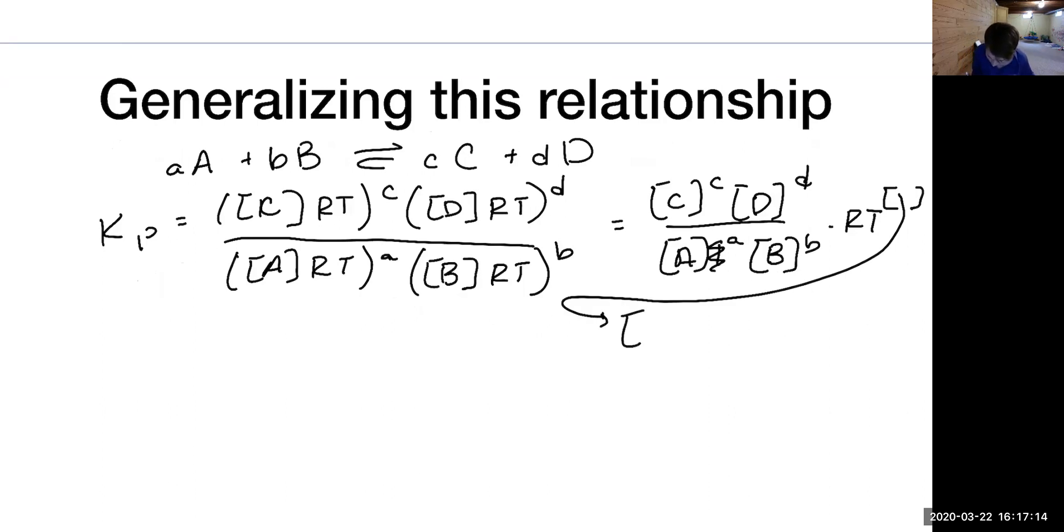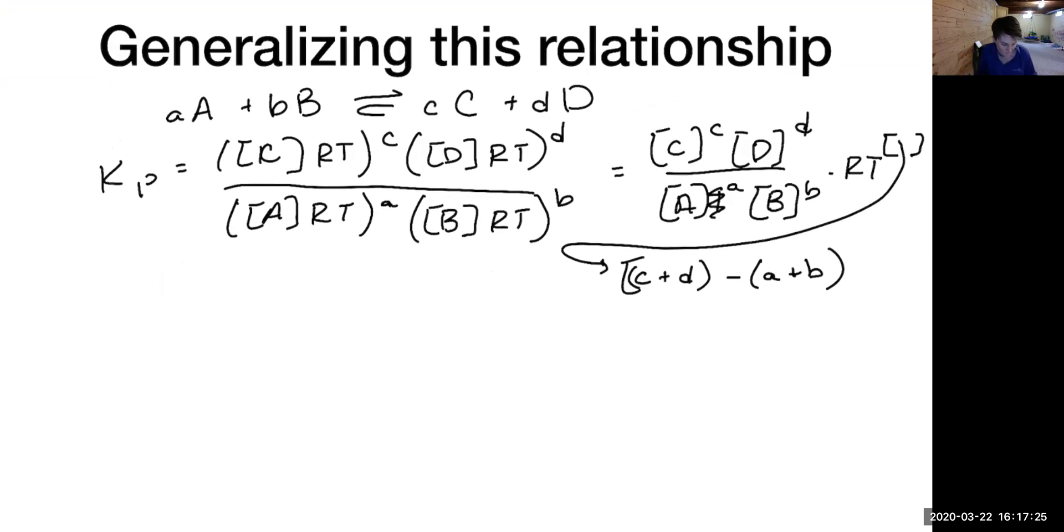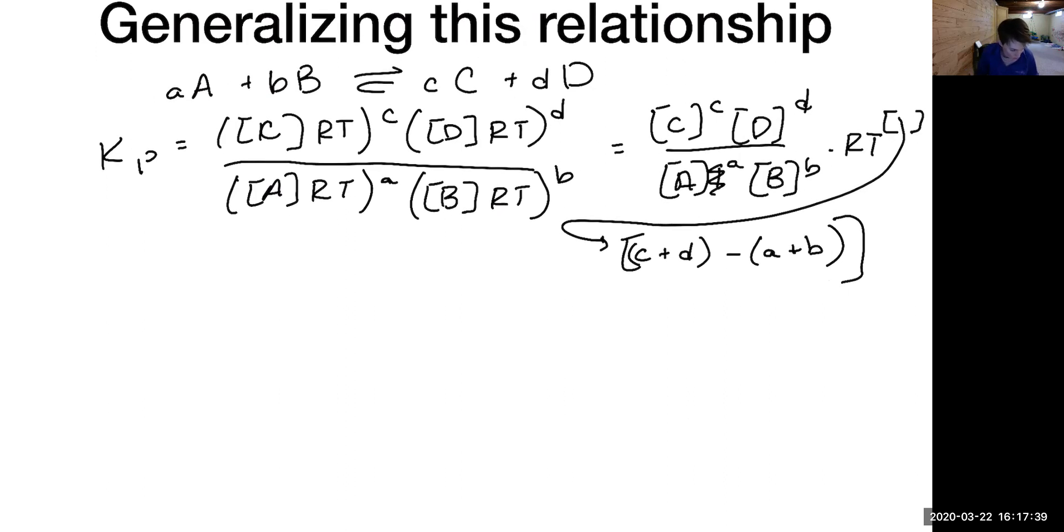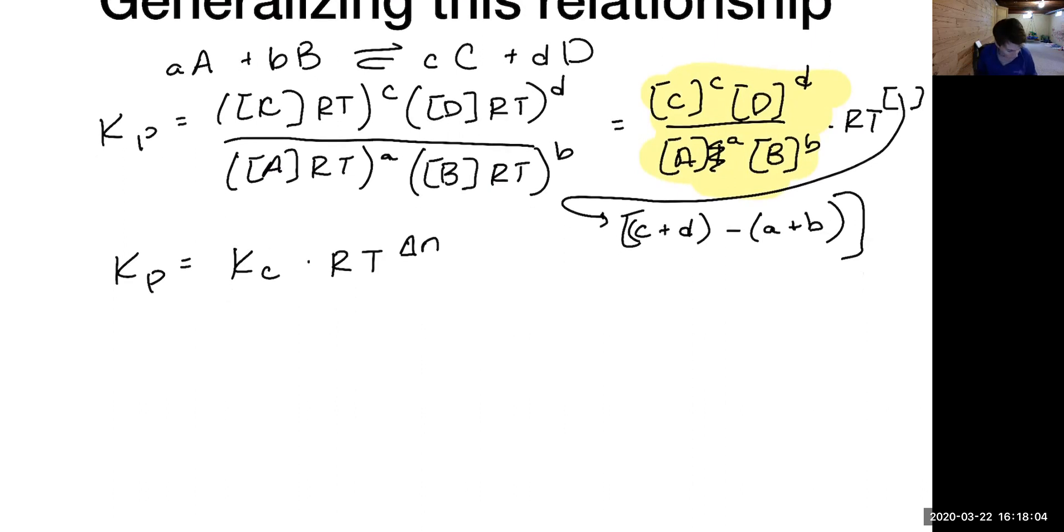If I want to calculate KP from concentrations, I can do that given the relationship that I just showed you on the last page. What this looks like is KP equals KC times RT to the power of delta n, my moles of product minus moles of reactant.